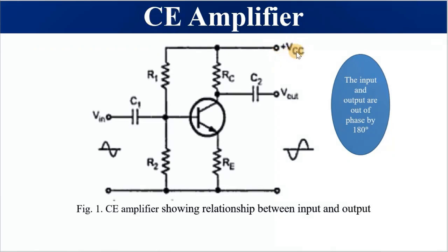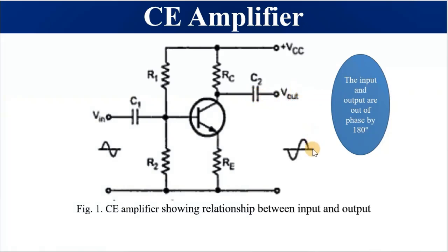We have one supply voltage Vcc, and the input signal is fed to the base of the transistor. Capacitor C1 is a coupling capacitor that blocks DC and couples the input signal to the base. R1 and R2 are biasing resistors — they determine the best Q-point for the operation of the transistor. Rc is a current limiting resistor. Capacitor C2 blocks DC so it doesn't proceed to the output, which may be a speaker, and couples the output signal from the collector to the output device. The input and output are out of phase by 180 degrees.